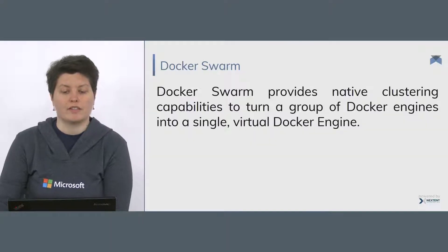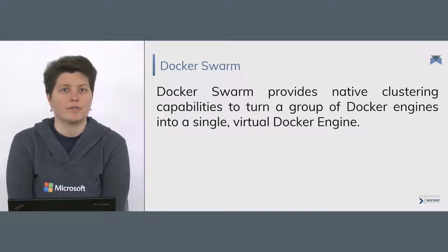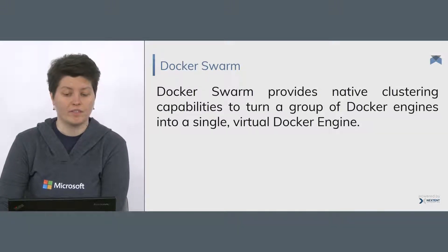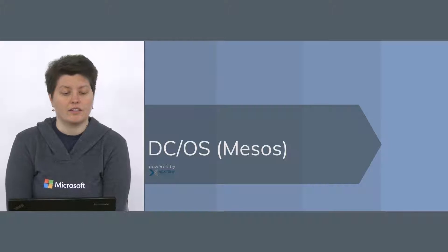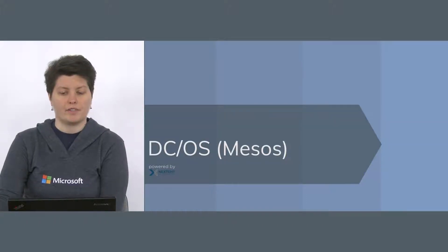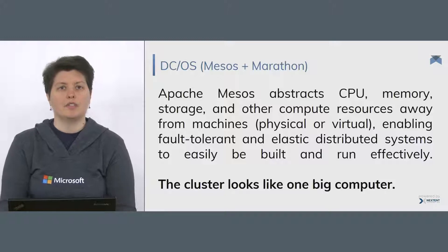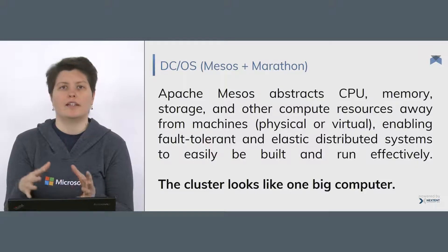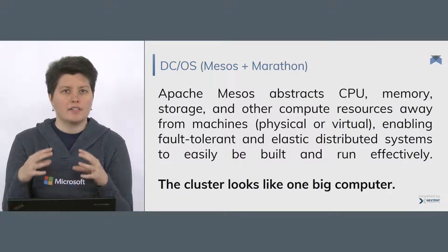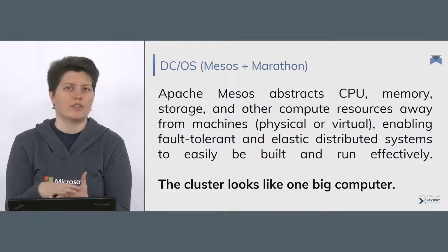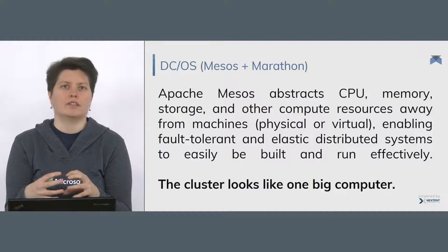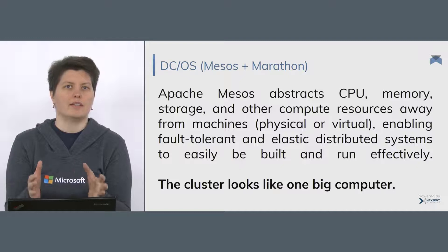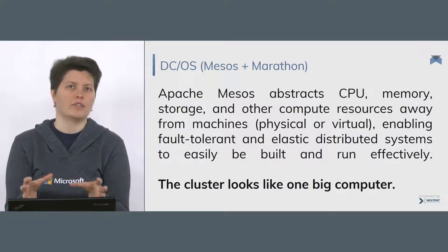Docker Swarm is the native orchestration system that comes with Docker itself. The second is DCOS or Mesos. What you need to know about DCOS is that it has been created based on Apache Mesos and Marathon. The main characteristic of this orchestration system is that if you connect multiple cluster nodes into a cluster, then it lets you see these servers as one big computer.